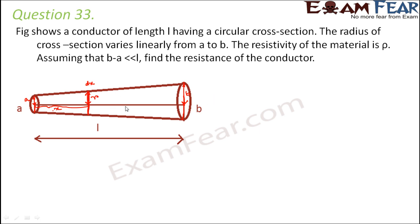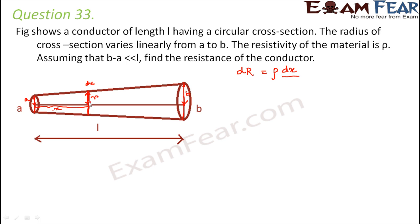Our aim is to write R in terms of A and B, since R is an assumed value not given in the question. The resistance of this small element dR equals rho L by A, where the length is dx and the cross sectional area is pi R squared. So dR equals rho dx divided by pi R squared.